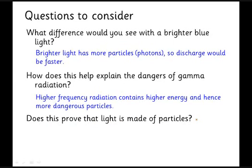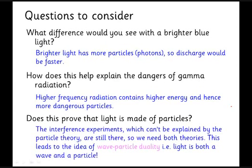And then finally, does this prove that light is made of particles? Well, not exactly, because light still does interference as well. So you can't explain those with a particle theory. So what we need is both theories. So this leads to the crucial idea, this idea of wave-particle duality, that light behaves as both a wave and a particle, and you need both models to explain its behavior.